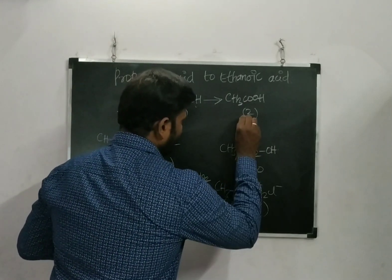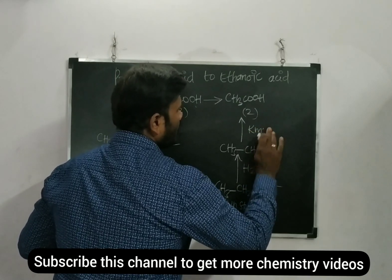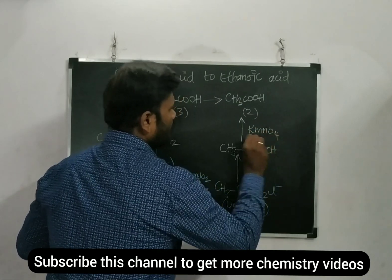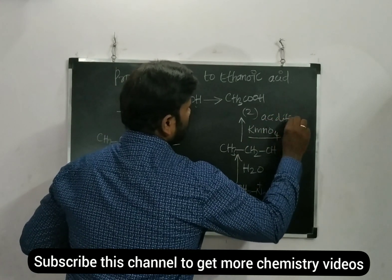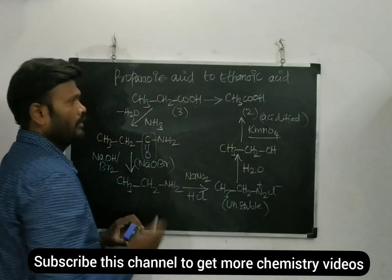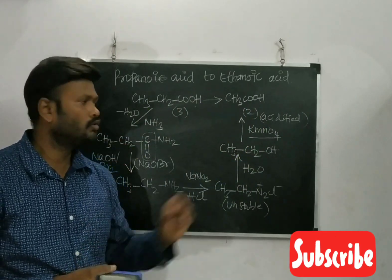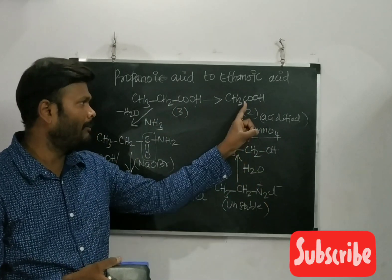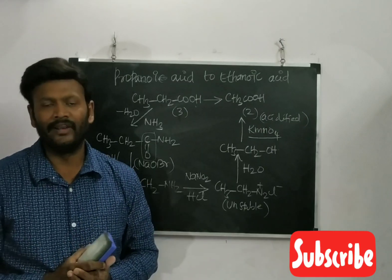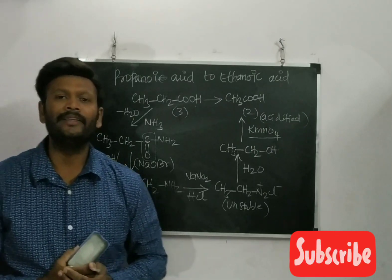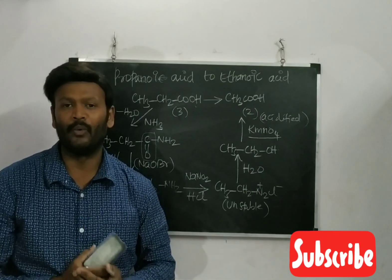Once I got the alcohol, I can use an oxidizing agent such as KMnO4 or acidified KMnO4. That will oxidize the two-carbon alcohol to get the two-carbon containing acid — which is ethanoic acid. Thank you so much for watching. Please share with others to get benefit, and don't forget to subscribe to my channel. Thanks so much for watching!